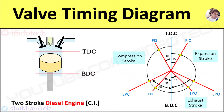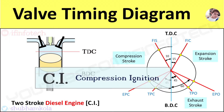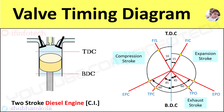Hi everyone. In this video we'll discuss the actual valve timing diagram for a CI engine. CI is compression ignition, where air is compressed within the cylinder and the heat of this compressed air is used to ignite the fuel. It is used in diesel engines. In this video we'll discuss the valve timing diagram for a two-stroke diesel engine. Here I have drawn the sketch.